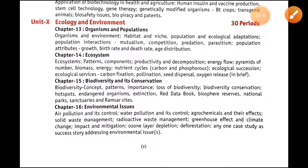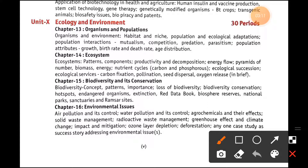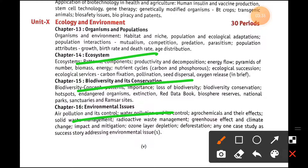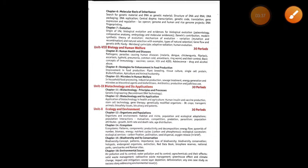The last unit is Ecology and Environment, covering organisms, population interactions, ecosystem and its various components, biodiversity and how we can preserve it, and finally environmental issues. We will now start with the first unit, which is Reproduction.